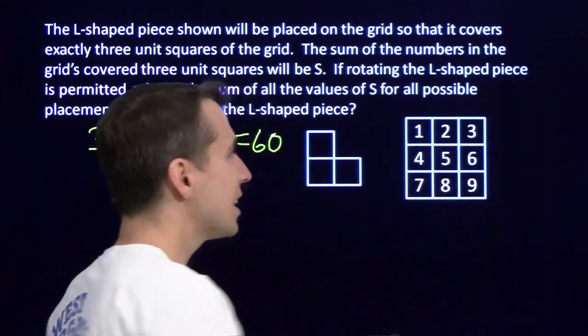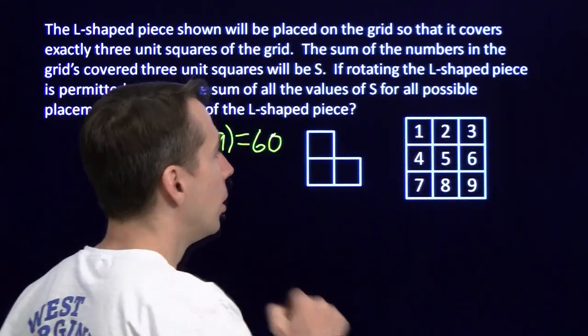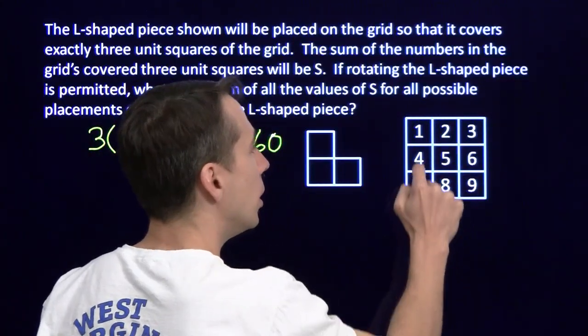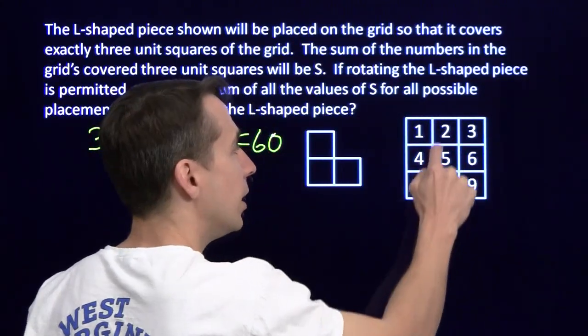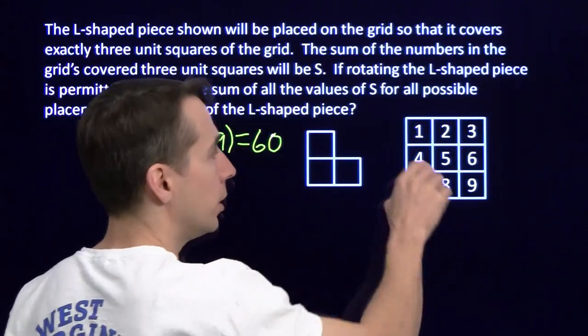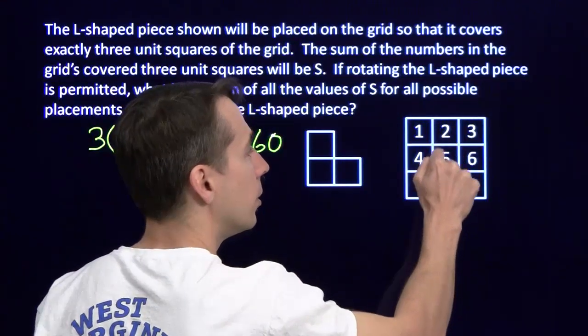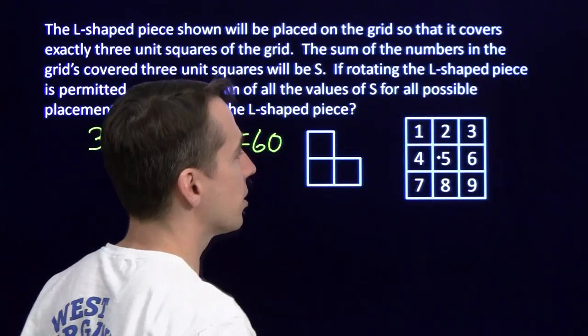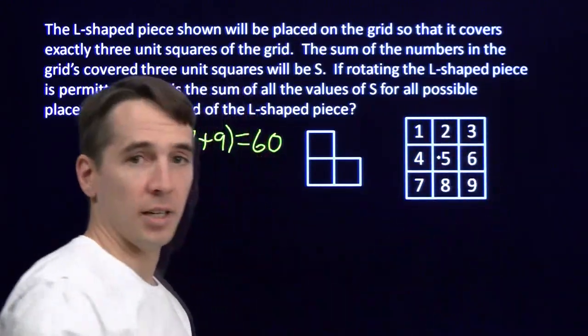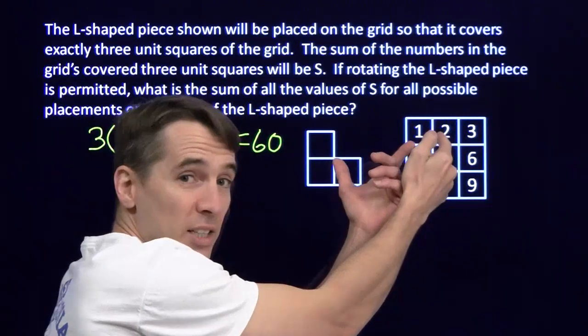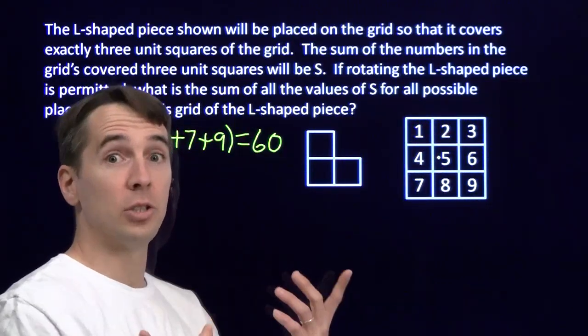Now let's look at the ones on the sides. Let's take a look at the 2. I've got the 4, 1, 2, the 1, 2, 5, the 2, 5, 4. And over here on the other side, 3, 2, 5, then 2, 5, 6, and 2, 3, 6. So there are 6 ways total that I can get that 2 into the sum. 6 ways for the 4, 6 ways for the 6, 6 ways for the 8.